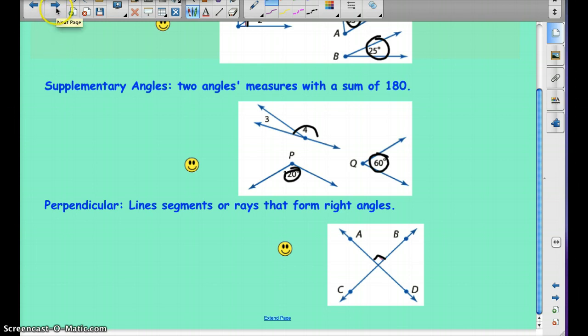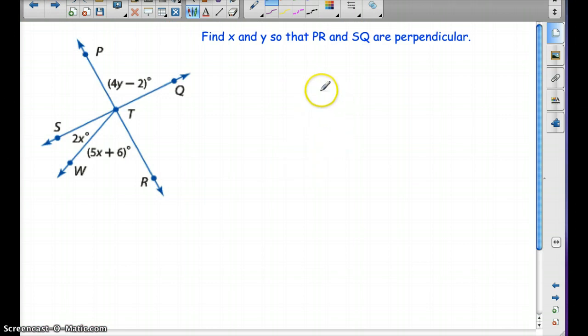On the next slide, we're going to do some examples. So we're going to find X and Y so that PR and SQ are perpendicular. So we have PR and SQ are perpendicular. So we want them to be perpendicular. We want them to be 90 degrees. So here's PR and here's SQ. So we want their intersection to be 90 degrees. So how can we do this? Well, we want to solve for Y. So remember, perpendicular means 90 degrees. So 4Y minus 2 equals 90. That's how we can solve for Y. So we'd add 2 to both sides. We'd have 4Y equals 92. We'd divide by 4 on both sides. And so Y is going to equal 23.